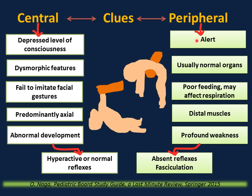Clues to peripheral causes: the infant is usually alert, not depressed, usually normal organs, poor feeding. The weakness may involve the respiratory muscles and you will see the infant mainly using the abdominal muscles to breathe. The weakness is more distal, not axial, and it is profound — infants with peripheral causes are much weaker than those with central causes. On physical exam, reflexes are depressed or absent. Looking at the tongue, which is the best place to look for fasciculations — spontaneous contraction of muscles — you will see fasciculations in cases with lower motor neuron lesions or peripheral causes.